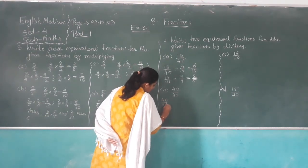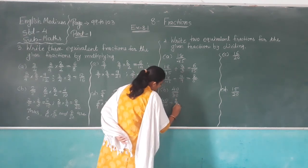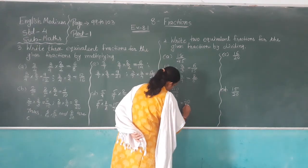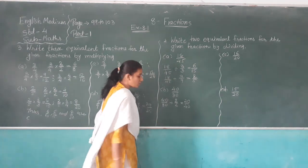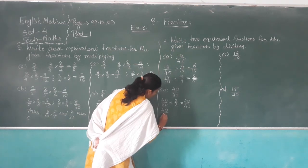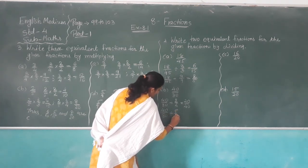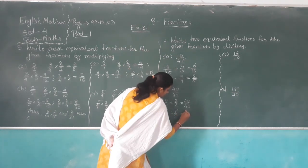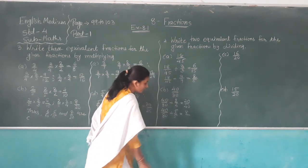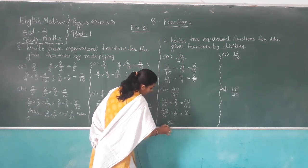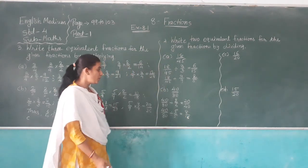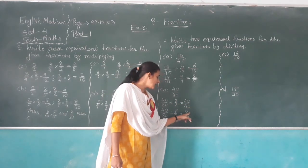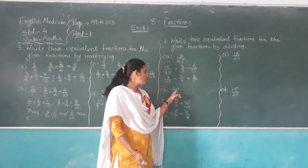Forty out of eighty divided by two over two: twenty over forty. It is also divisible by five since the last digit is zero. Dividing forty by five gives eight, and eighty divided by five gives sixteen. So twenty out of forty and eight out of sixteen are equivalent fractions of forty out of eighty.